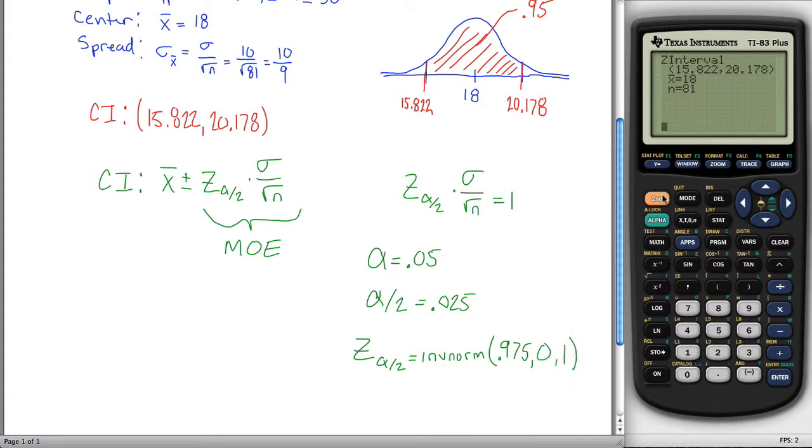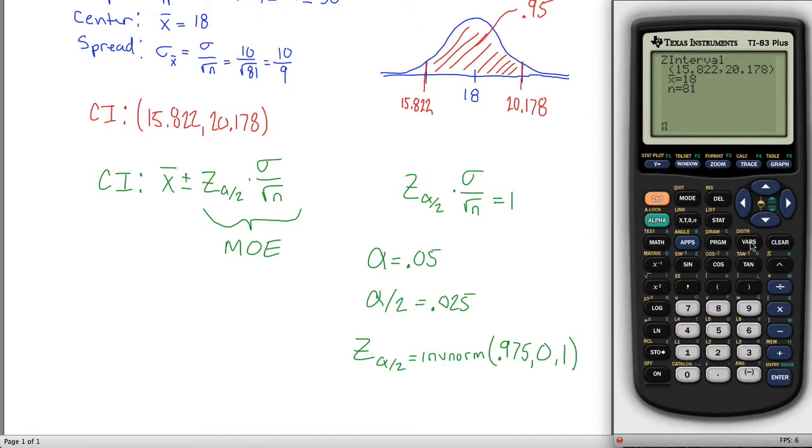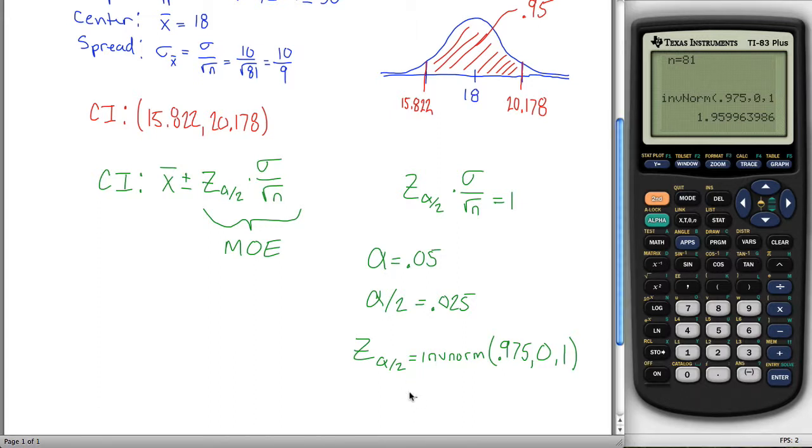So inverse norm is a function that's under distributions, which is above variables here. If you go down to inverse norm, and you hit .975, comma, 0, comma, 1, it's going to tell me that z sub alpha over 2 is equal to 1.96 approximately.